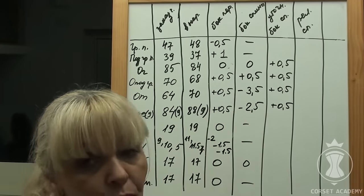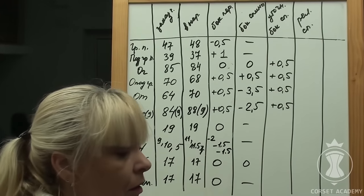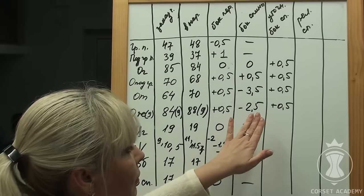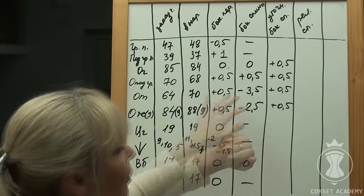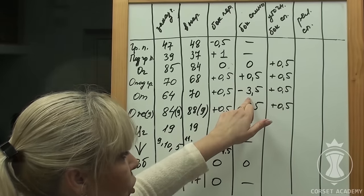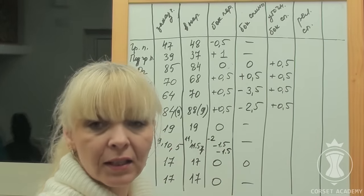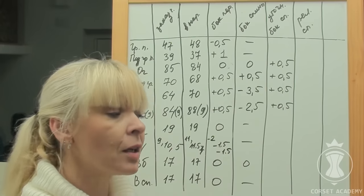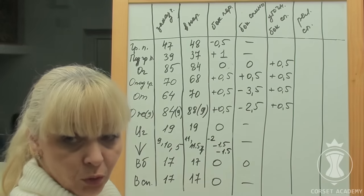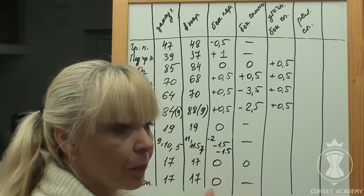Now let's determine the side seam of the back. All relevant calculations are recorded in column 6. So we've decided to apply 0 alterations to the bust circumference for the side seam of the front. Then let's add 0.5 cm to the bust circumference for the adjusted side seam of the back. We leave plus 0.5 cm for its underbust circumference and continue adding the same 0.5 cm at the waistline and stomach levels.